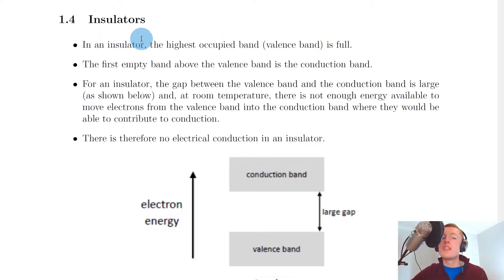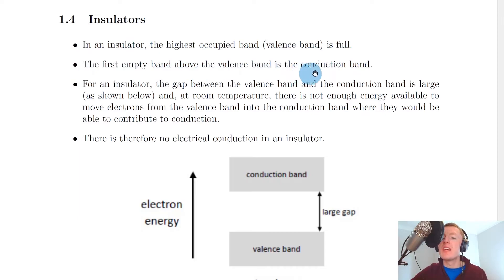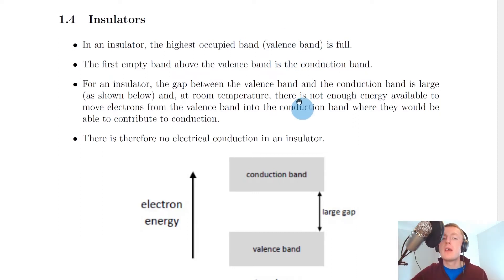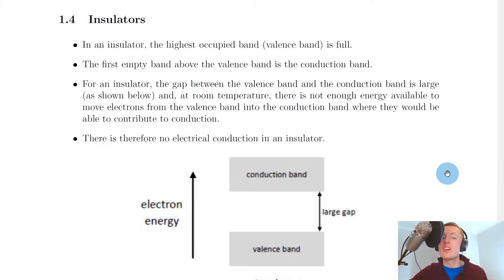Next we have insulators. In an insulator the highest occupied band known as the valence band is full. The first empty band above the valence band is the conduction band. Since there are no electrons in the conduction band to conduct, no conduction can take place in an insulator.